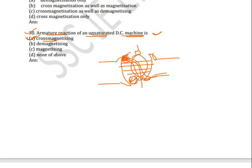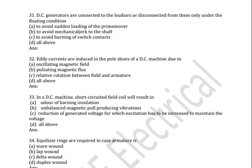Now see the first question: DC generators are connected to bus bars or disconnected from them only under the floating condition. Which option is correct? The options are: to avoid sudden loading of prime mover, to avoid mechanical jerk to the shaft, to avoid burning of switch contacts. The correct answer is all of these.